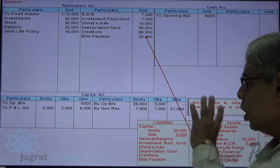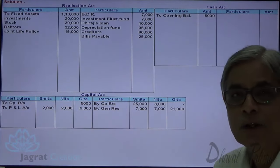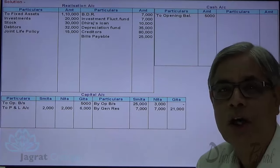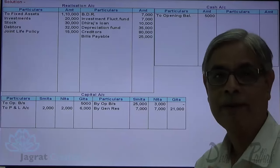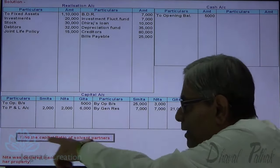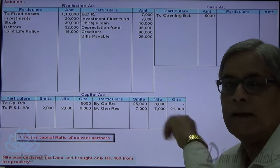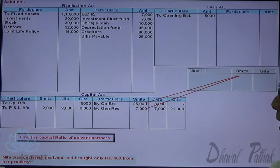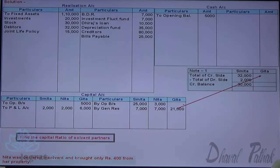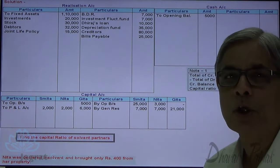This is a sum on Garner versus Moore. One of the partners is insolvent and the capital deficit has to be distributed in the proportion of capital that existed on the date of dissolution. Let me find the capital ratio of solvent partners. Nita is declared insolvent, so keep Nita aside. Smita and Gita are the solvent partners. Credit total of Smita: 25 plus 7 is 32, minus 2,000, balance 30,000. For Gita: 21,000 minus 11,000 amounts to 10,000. So capital ratio is 3:1, and in this ratio the capital deficit of Nita will be distributed among solvent partners.